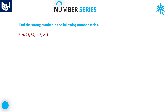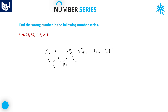Next problem. The numbers are 6, 9, 23, 57, 116, and 211. Let's observe the gaps: from 6 to 9, the gap is 3. From 9 to 23, the gap is 14. From 23 to 57, the gap is 34. From 57 to 116, the gap is 59. And from 116 to 211, the gap is 95.